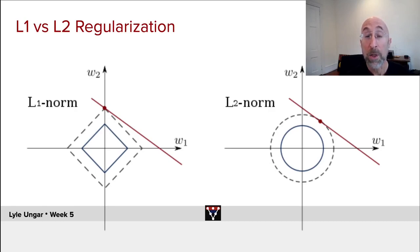So you can see how the L1 norm can zero things out, whereas the L2 norm is going to try and shrink all of the weights.